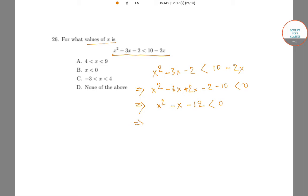Now doing a middle term factorization we get x² - 4x + 3x - 12 < 0, which is (x - 4)(x + 3) < 0.